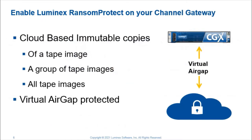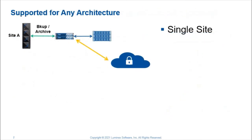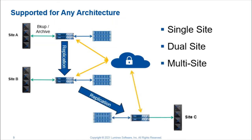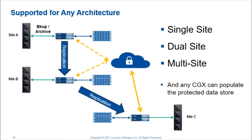Enabling Luminix Ransom Protect on your channel gateways positions you for cloud-based immutable copies of a tape image, of a group of tape images, or all — virtual air-gapped protected. Luminix Ransom Protect is simple to integrate into any architecture, perhaps single-site, dual-site, or multi-site. And any channel gateway in the environment can be used to populate immutable storage with your backup and archive data.